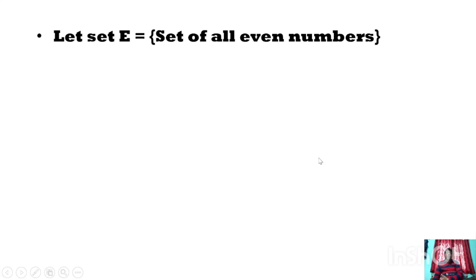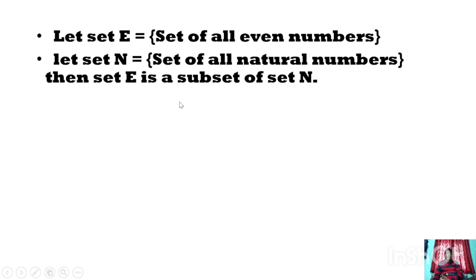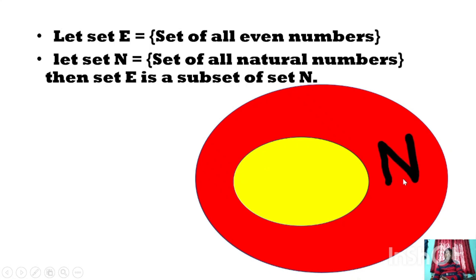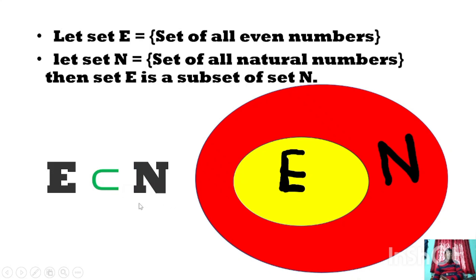Another example: let E be the set of all even numbers and N be the set of all natural numbers. Clearly, set E is a subset of set N, because all even natural numbers are contained in set N and all elements of set E are also elements of set N. But not all elements of set N are elements of set E, meaning N contains E but E does not contain N. That is why E is a subset of N. Looking at the Venn diagram, the yellow structure is inside the red/purple structure — E is clearly a subset of N.